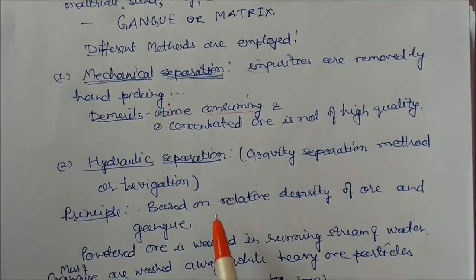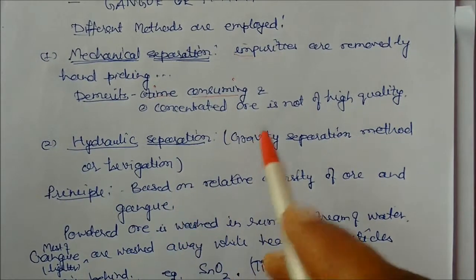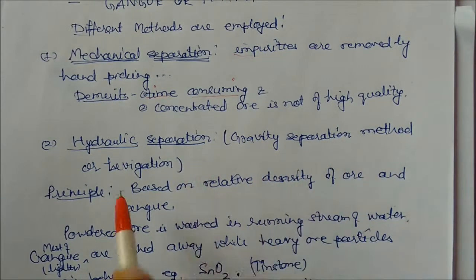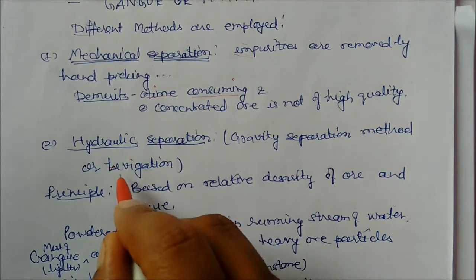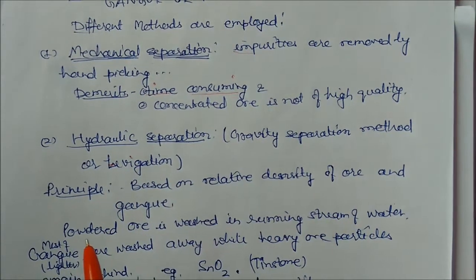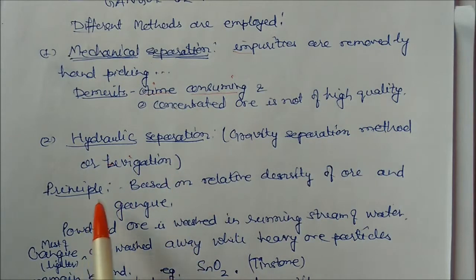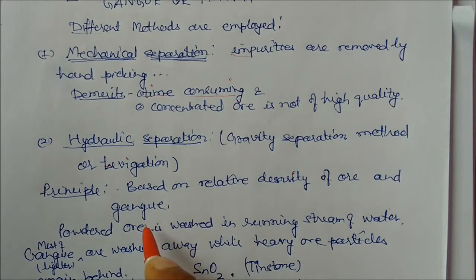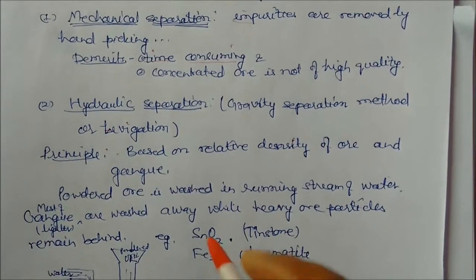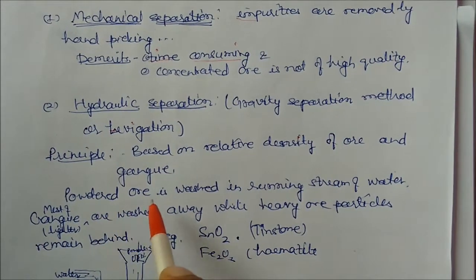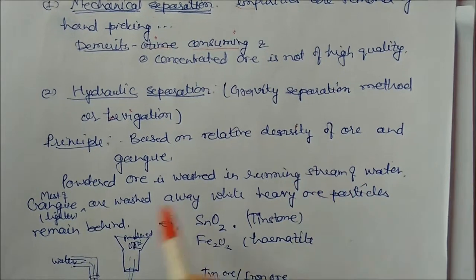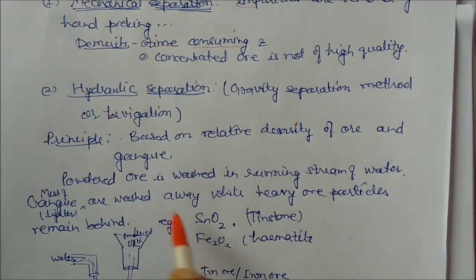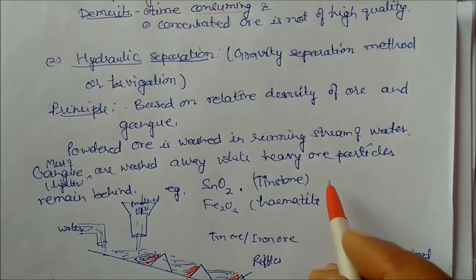Next is hydraulic separation, also called gravity separation method or levigation. The basic principle behind hydraulic separation is that it is based on the relative density of ore and gangue particles. Gangue particles are lighter in weight and ores are heavier, so they are easily separated. Powdered ore is washed in a running stream of water and most of the gangue particles, being lighter, are washed away while heavier ores settle behind.